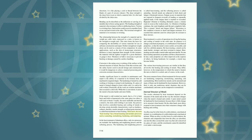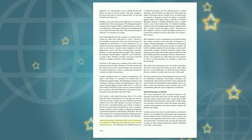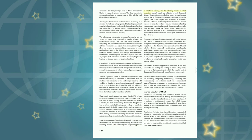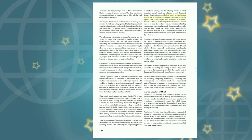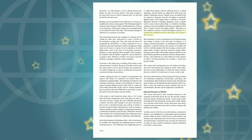With steels, heat treating includes processes such as annealing, normalizing, hardening, and tempering. In the heat treatment of aluminum alloys, only two processes are included: the hardening and toughening process (called heat treating) and the softening process (called annealing). Aircraft metals are subjected to both shock and fatigue stresses. Fatigue occurs in materials exposed to frequent reversals of loading or repeatedly applied loads; if the fatigue limit is reached or exceeded, repeated vibration or bending ultimately causes a minute crack at the weakest point. As vibration or bending continues, the crack lengthens until the part completely fails—termed shock and fatigue failure. Resistance to this condition is known as shock and fatigue resistance.